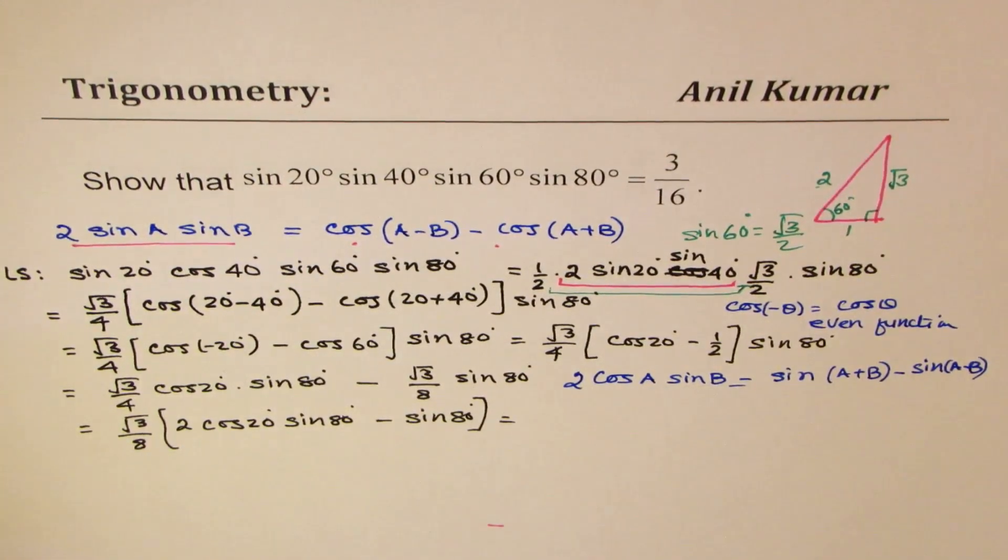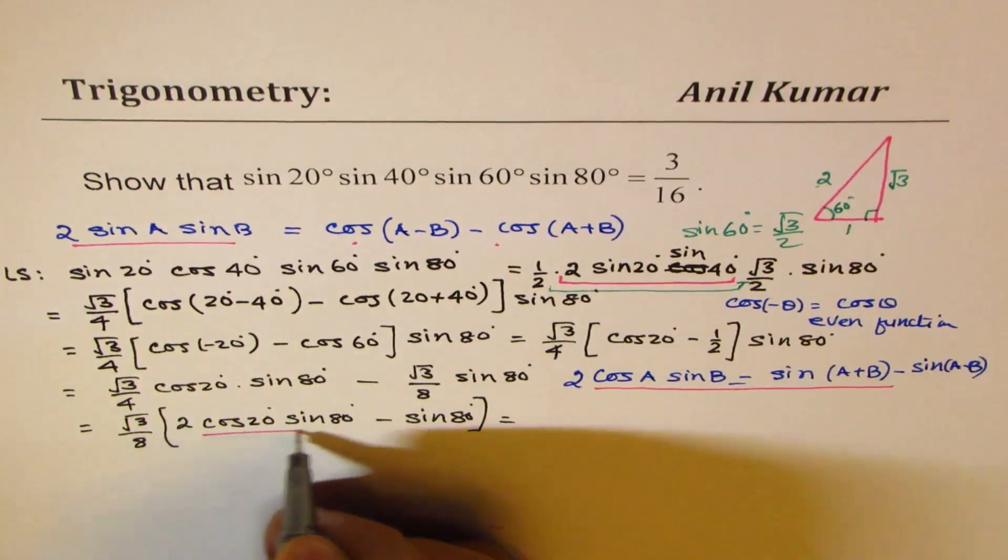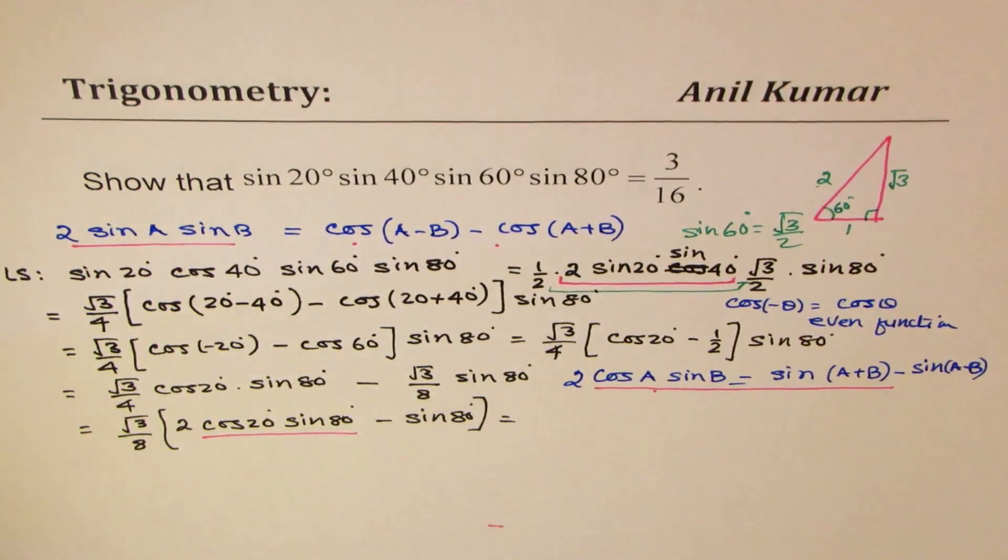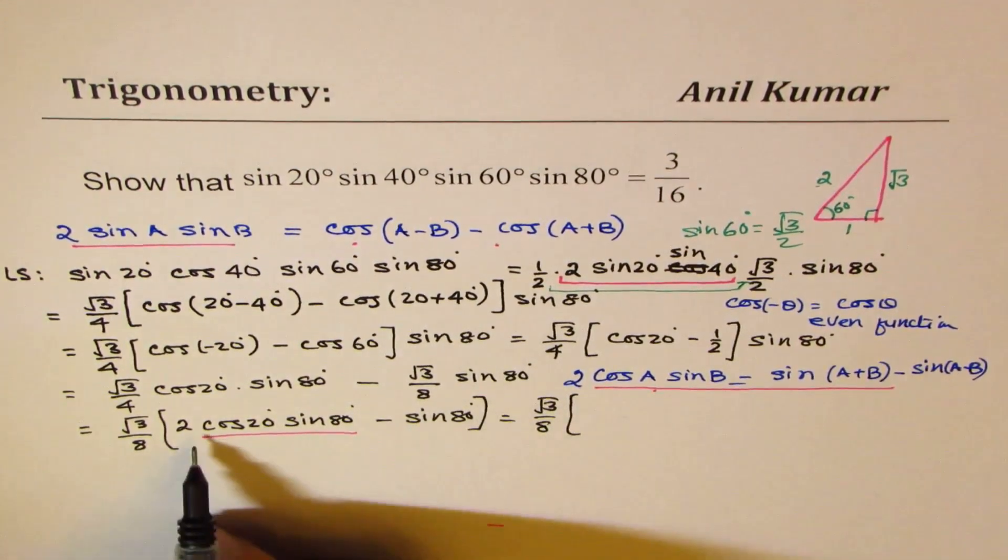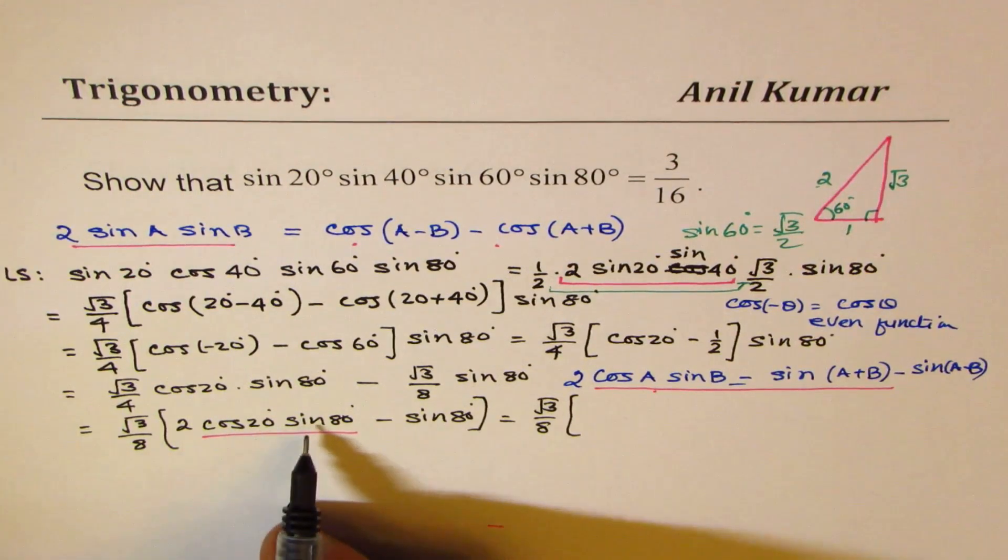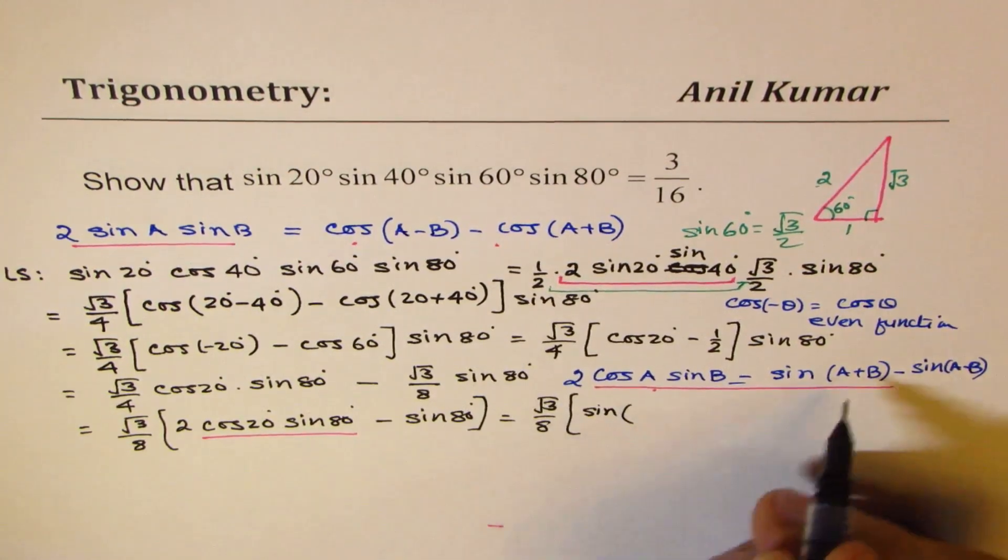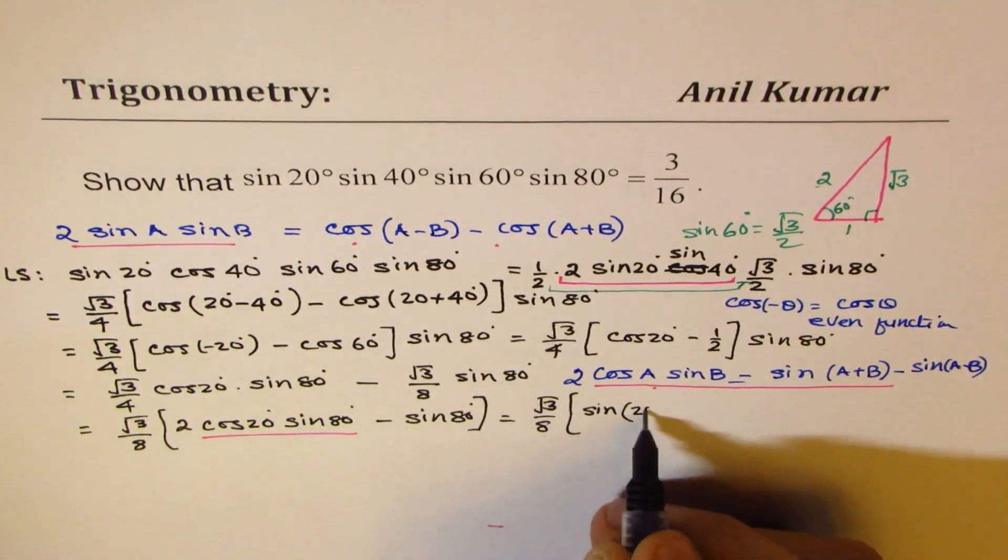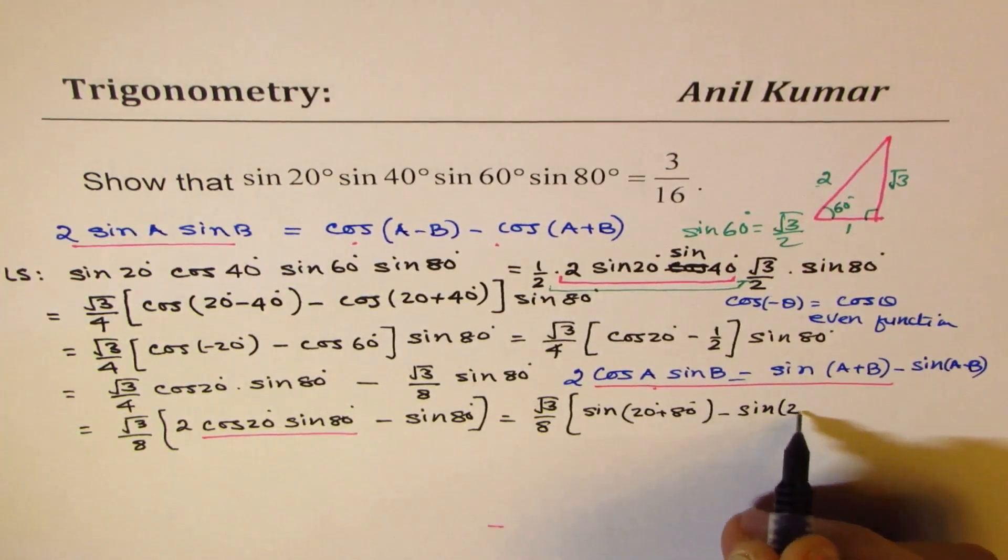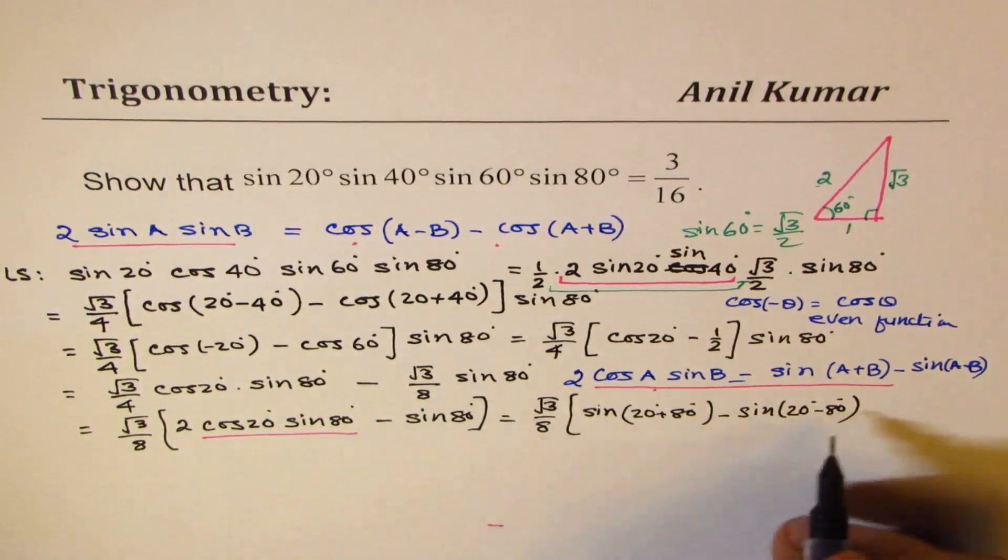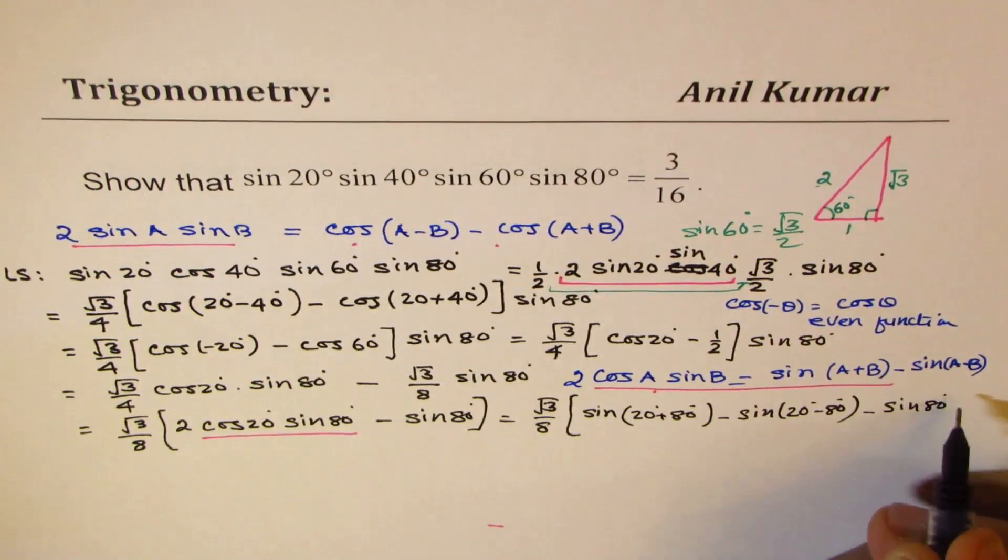Now, I'll apply this formula here. You see how I'm moving, slowly, but surely, towards the right direction. So I'm using this formula. So what we have here is, √3 over 8. And twice cos 20 sin 80, could be written as sin(A + B), that means 20 + 80, 20 + 80°, minus sin(20 - 80°), minus, we have sin 80°.